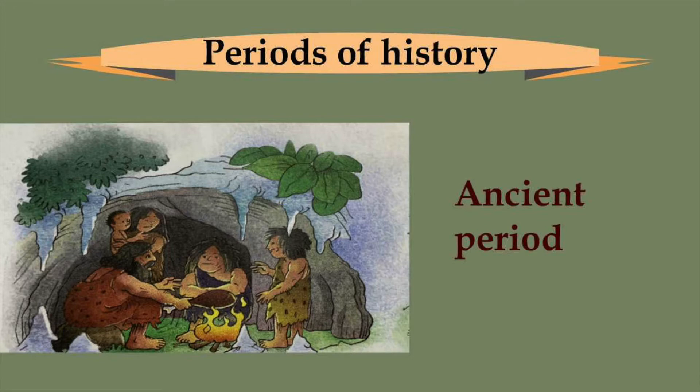The ancient period starts from the time life began on earth. During this time, humans learned to speak, write, grow their own food, and build houses.